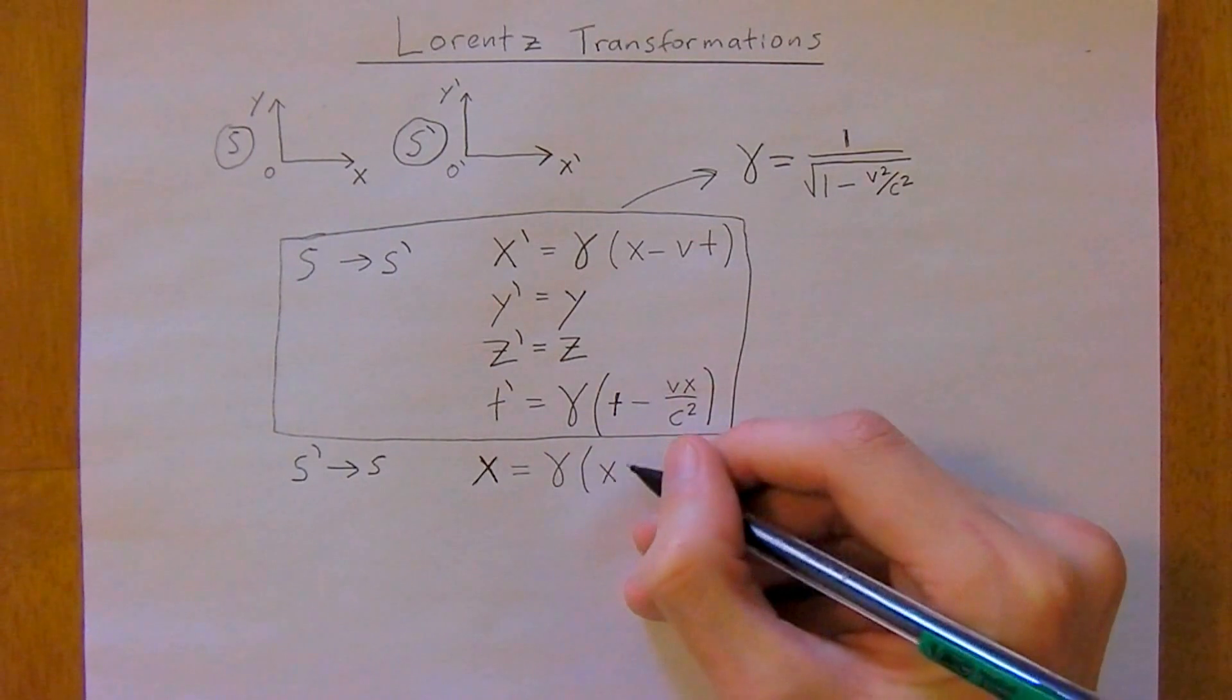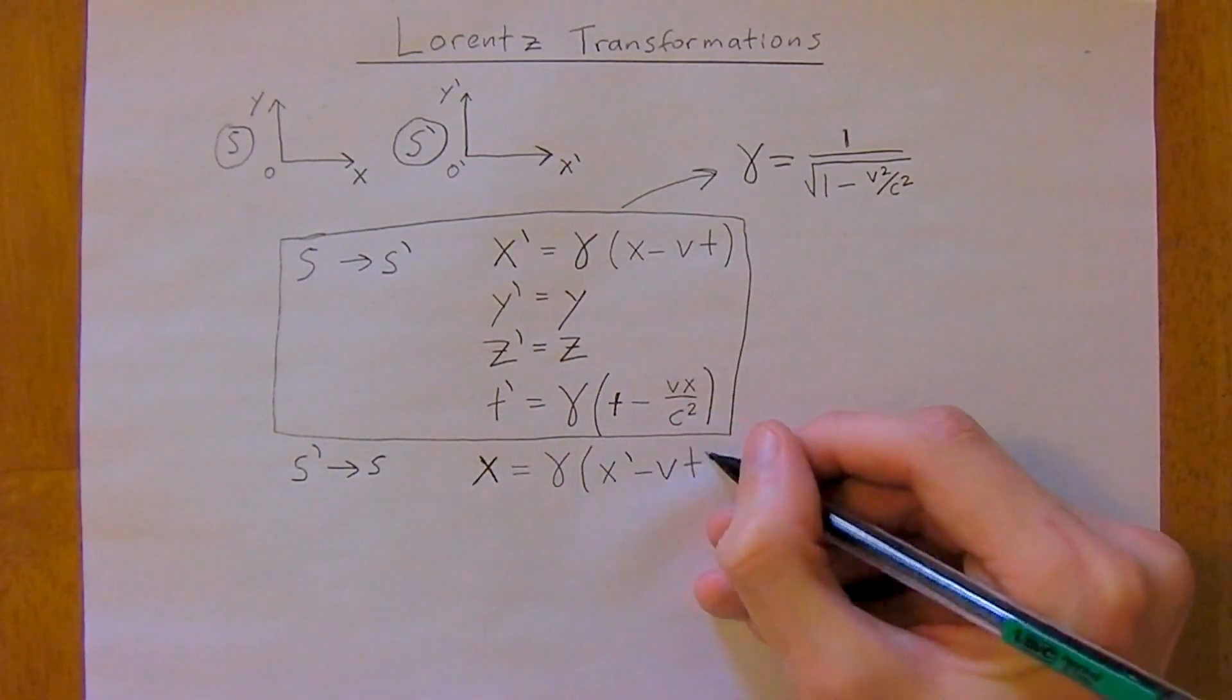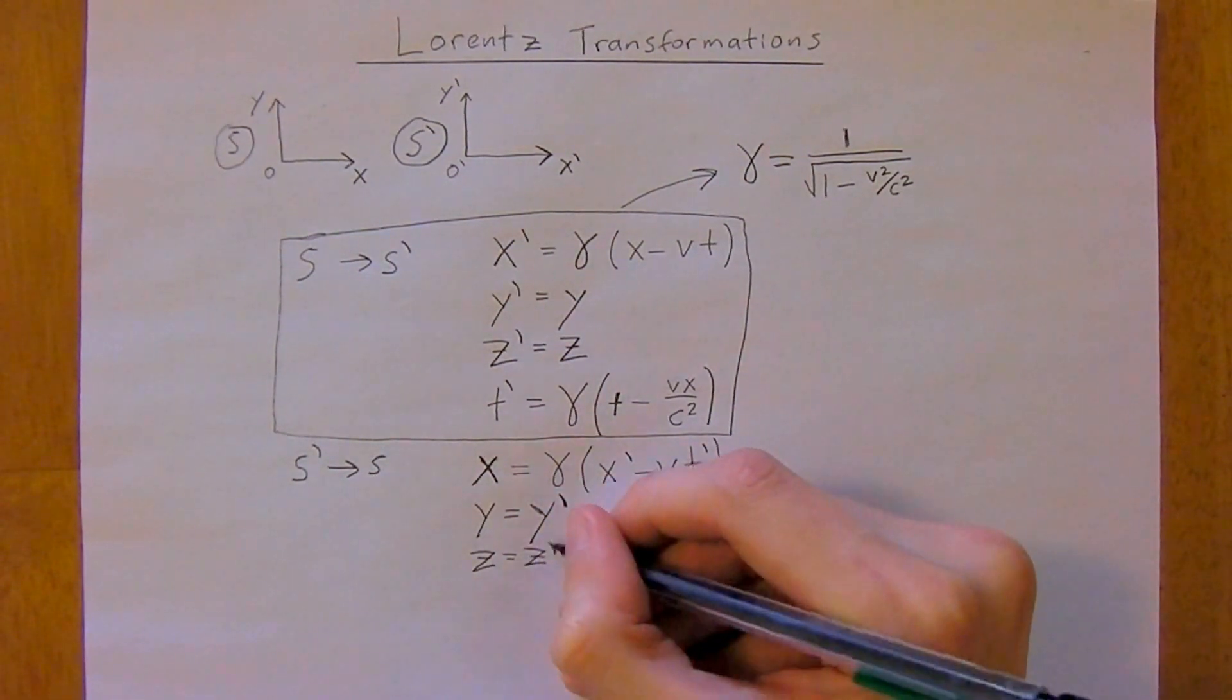Now say we wanted to go the other way, so we wanted to go from S not to S frame, we would use the following equations. Just to keep it fun, we physicists we like our equations. So X we would transform it as gamma times X not minus V T not. And Y, do you remember? It's a tricky one. Y not. And Z is Z not.